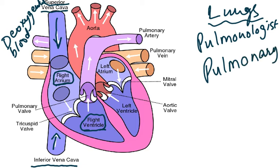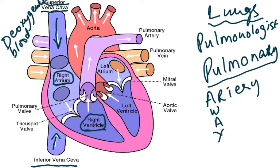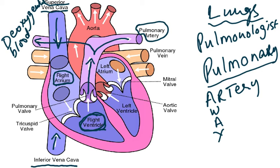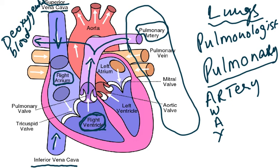Anything taking blood away from the heart is an artery, so the vessel taking deoxygenated blood away from the right ventricle is the pulmonary artery. This pulmonary artery comes out of the right ventricle and immediately divides into right and left sides, because there is a right lung and a left lung. So there is a right pulmonary artery and a left pulmonary artery going to the two lungs.